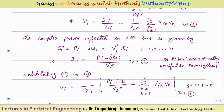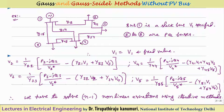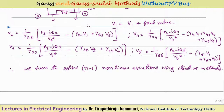Since Vi appears on both sides, we go for an iterative method to calculate all bus voltages. Taking the example of a 5-bus system, all buses are assumed to be load buses except one slack bus — we always need at least one slack bus since we do not know the losses beforehand. The slack bus has a specified voltage magnitude and angle of zero degrees. There is no PV bus in this case to keep the analysis simple.